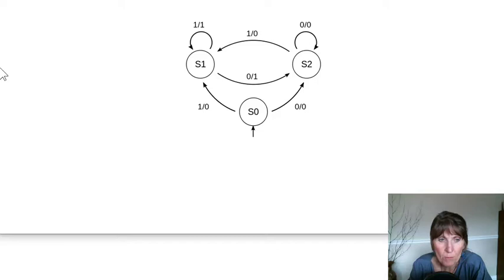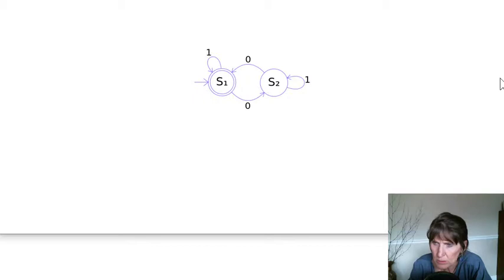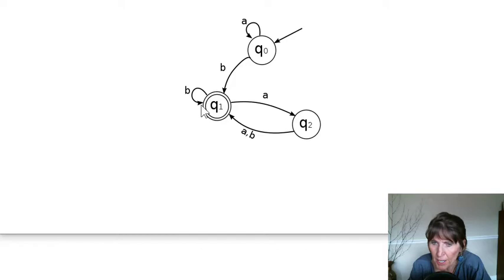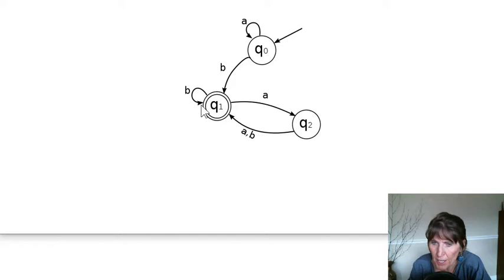This one is different because notice that the transition, remember when we had two? Let's go back one. Oh, no, it was this one. A comma B. That really says A, go here on A or go here when you get a B as input. These ones mean something different. So this one means, this is the transition. This one has output. So when you're at S2 and you get a 1, you're going to go to S1, but you're going to get an output of 0. So when you have this kind of combination, it's showing you the first value is the input and the second value is the output that happens on this transition.